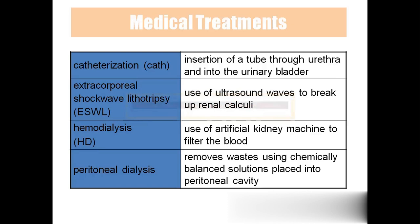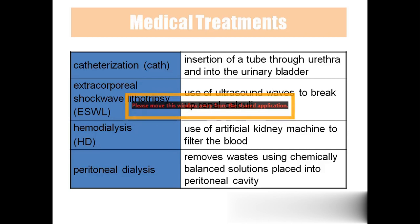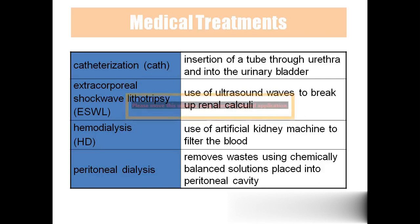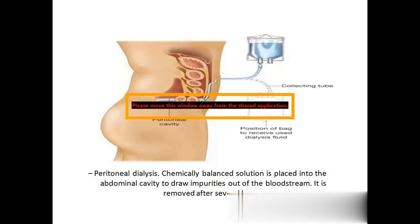Hemodialysis: when the kidneys fail, a dialysis machine substitutes for their function — blood is passed through the machine, purified, and returned to the body. Peritoneal dialysis: a chemical fluid is placed into the peritoneal cavity to purify the blood; waste products are collected in a bag. This is used in the early stages of kidney failure.